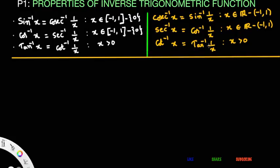Now we are going to prove these results. For the first one, we want to prove sin⁻¹x = csc⁻¹(1/x). Note that x belongs to the closed interval [−1, 1] minus the singleton set {0}. This condition is important, though we don't explicitly use it in the proof.